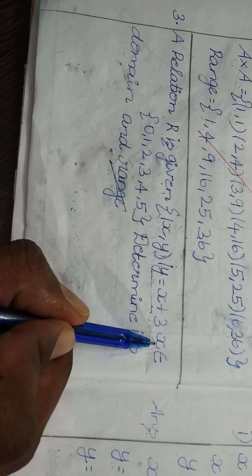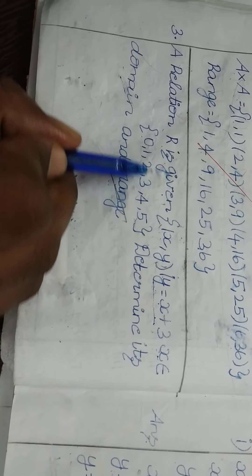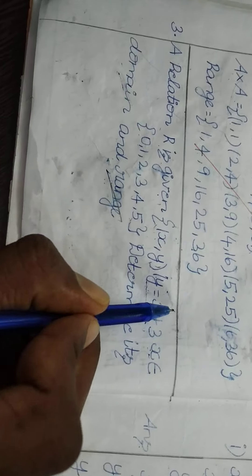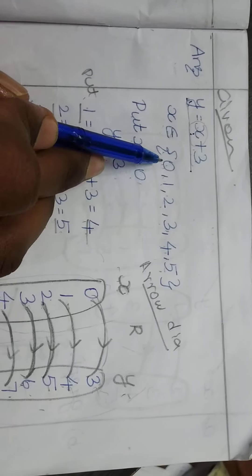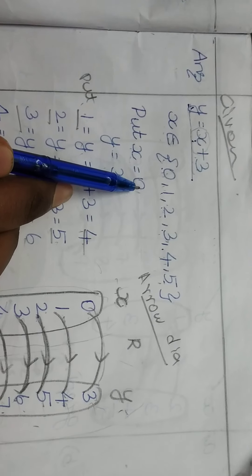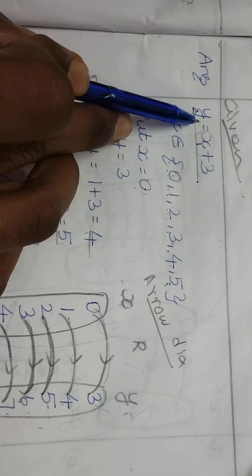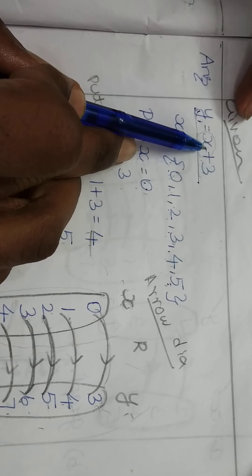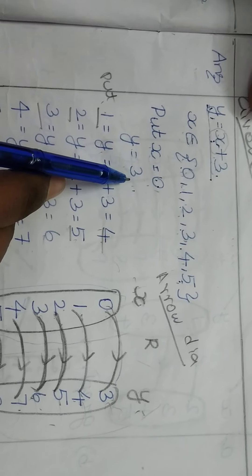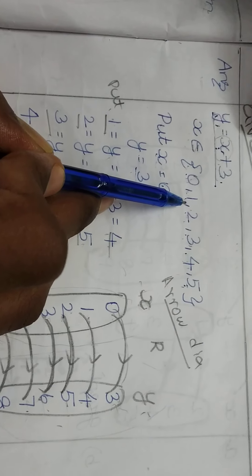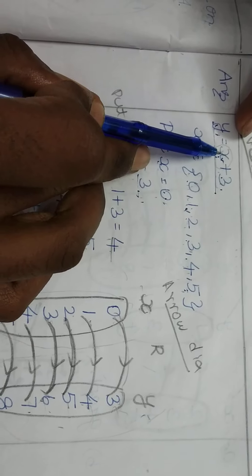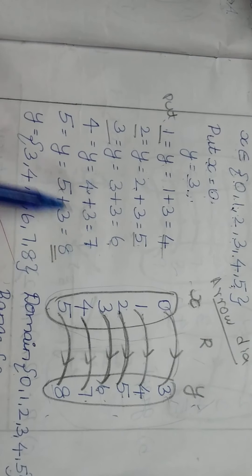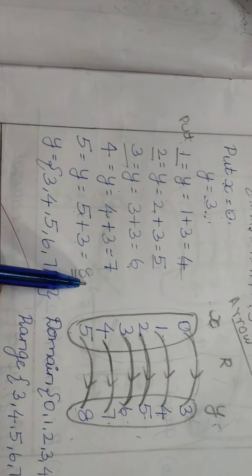So let's find the domain and range. y = x + 3, given condition x ∈ {0, 1, 2, 3, 4, 5}. Put x = 0: y = 3. Put x = 1: y = 4. Put x = 2: y = 5. Put x = 3: y = 6. Put x = 4: y = 7. Put x = 5: y = 8.